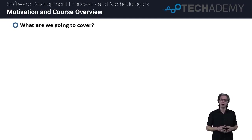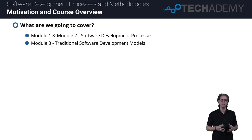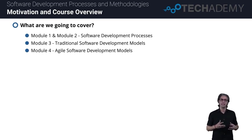We will learn enough to have meaningful conversations about software development processes in our teams. We'll also learn about traditional models of software development such as waterfall, V model, and rational unified process. Later in the course, we'll talk about the agile mindset and get an overview of some of the common models for agile and lean software development.